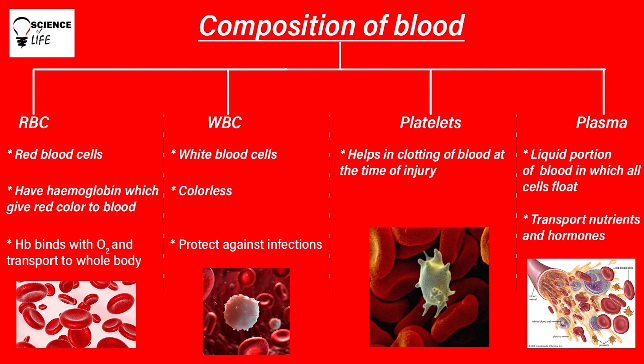Coming to the third category, that is platelets. Platelets generally help in clotting of the blood. Whenever we get any injury or wounds, blood comes out. Platelets are there for stopping that blood from flowing — for clotting the blood. If platelets were not there, our body would lose lots of blood, so they are very important.